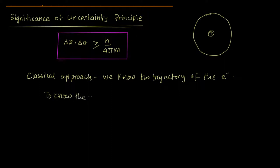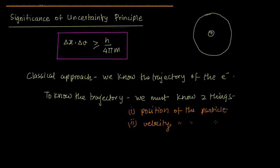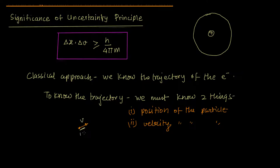To know the trajectory, we must know two things. The first is the position of the particle, and the second is the velocity of the particle — and by velocity I mean the magnitude as well as the direction. Because then only, say you know that the particle is currently here and its velocity vector is something like that, you expect that in the next very small time interval it will move a distance of V delta T.